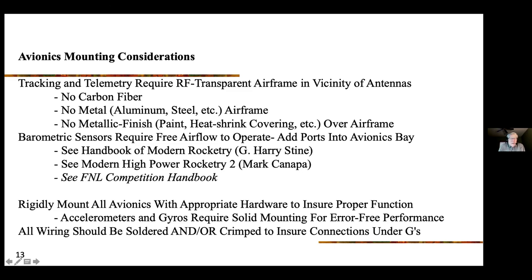Also be careful about metallic finishes — either paint or heat-shrink coverings like those used on radio-controlled aircraft. Stay away from anything with metal flake, candy apple red paint, silver paints, those kinds of things. If the airframe is covered with metallic paint, it can defeat your ability to track or receive telemetry. For barometric sensors, make sure you have ports for free airflow from the environment into the avionics bay.